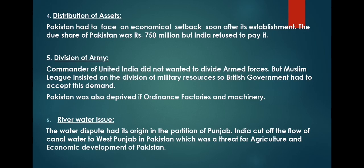Then comes the water canal issue. Punjab consists of five rivers: Jhelum, Chenab, Ravi, Sutlej, and Beas. At the time of the partition of Punjab, its rivers were also divided. Rivers Ravi, Sutlej, and Beas passed through India before entering Pakistan. In 1948, India stopped the water flow of these rivers into Pakistan, which affected its irrigation and agriculture. It was a huge loss and a step to destroy the economy of Pakistan.